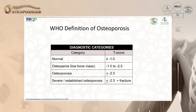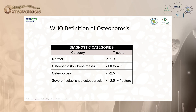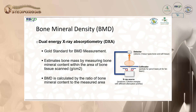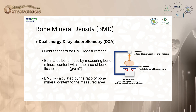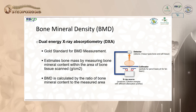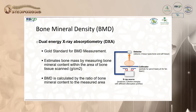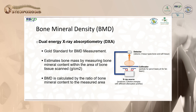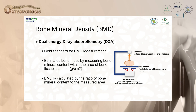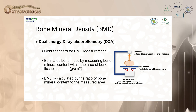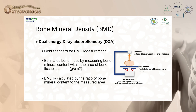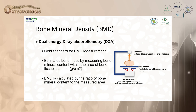The WHO definition categorizes severe osteoporosis as T-score less than minus 2.5 with fracture. DEXA is the gold standard for bone mineral density measurement. An X-ray source produces two photon energies with different attenuation profiles; detectors identify bone and soft tissue. Bone mass is estimated by measuring bone mineral content within the scanned area, expressed as grams per centimeter squared, and BMD is calculated as the ratio of bone mineral content to measured area.